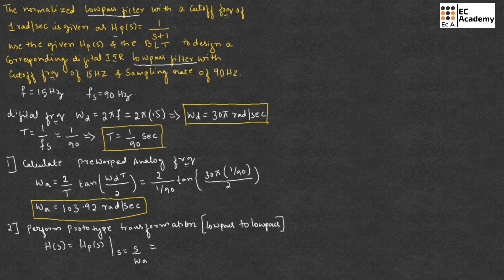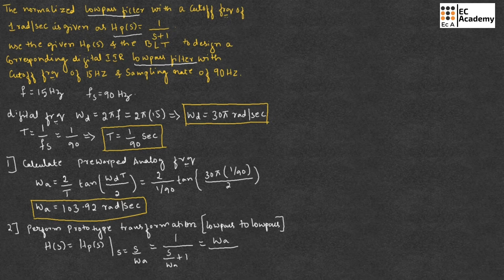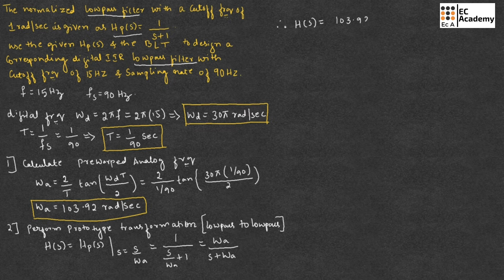Since H_P(S) is given as 1/(S+1), we substitute S with S/omega_A to get 1/((S/omega_A) + 1). Taking the LCM and simplifying, we get H(S) equal to omega_A divided by (S + omega_A). Therefore H(S) equals 103.92 divided by (S + 103.92). This is the analog filter specification.